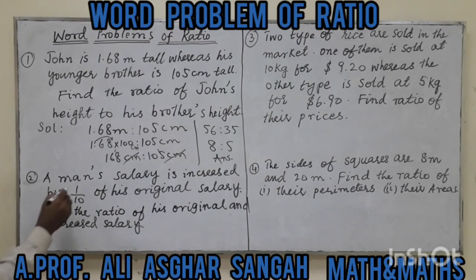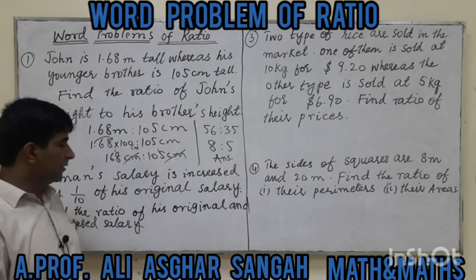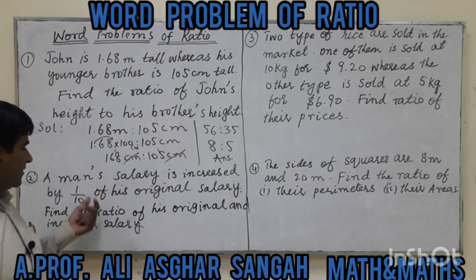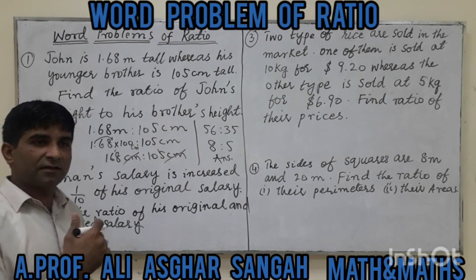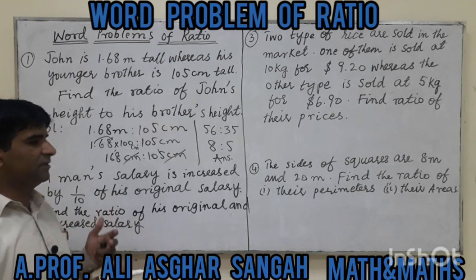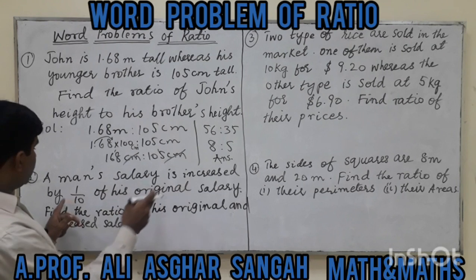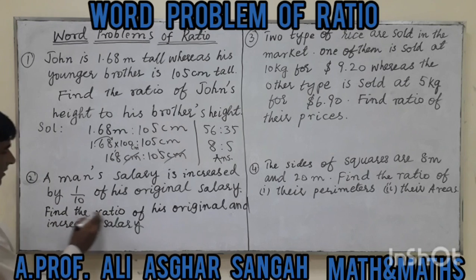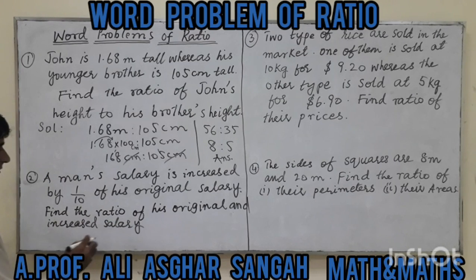Question number 2: A man's salary is increased by one tenth of his original salary. Find the ratio of his original salary to his increased salary. For example, if the salary is 3,000 then an increase of one tenth means ten percent, so 3,000 increases by 300. If salary is 5,000 it increases by 500, and if 6,000 it increases by 600.